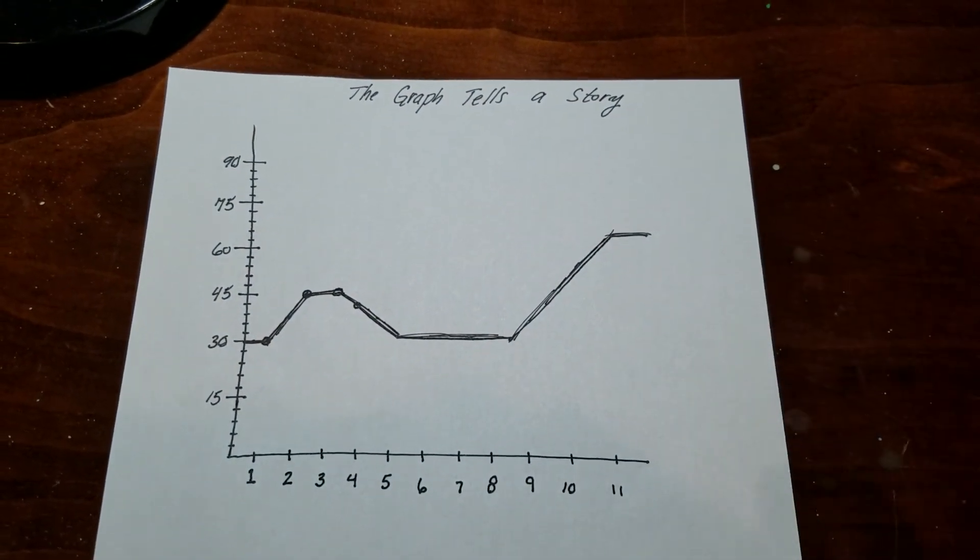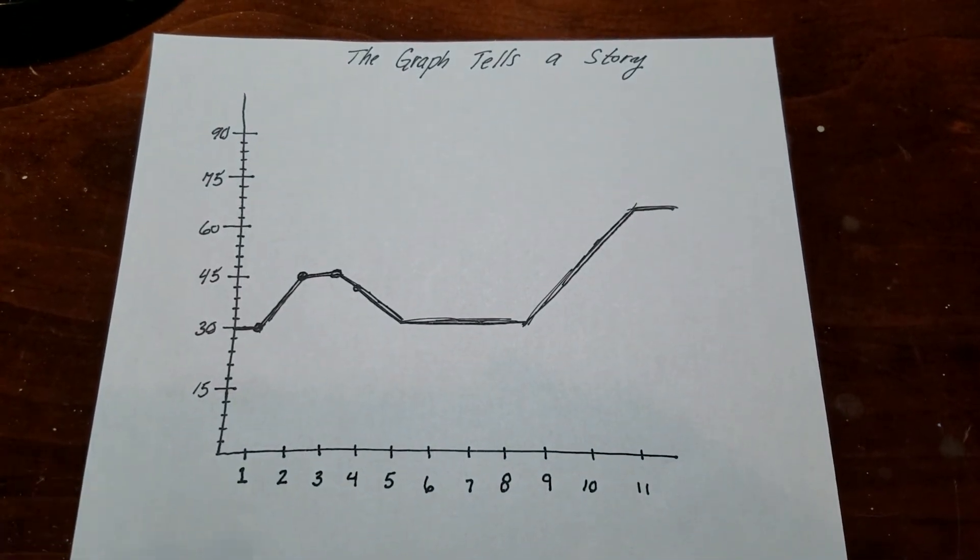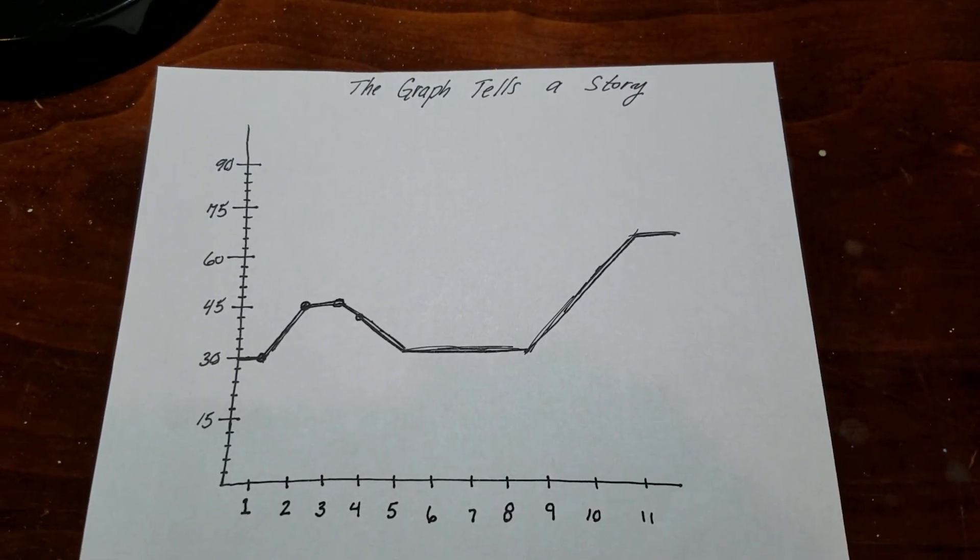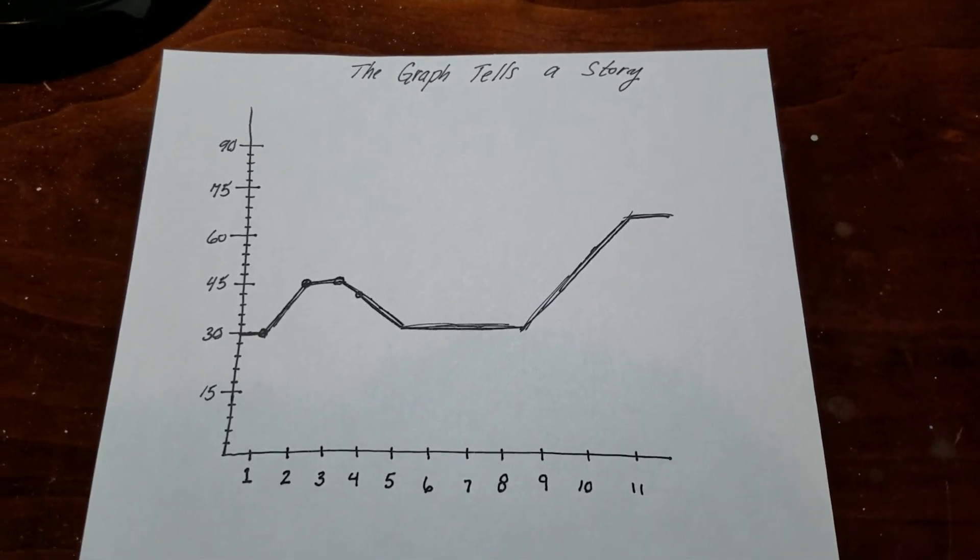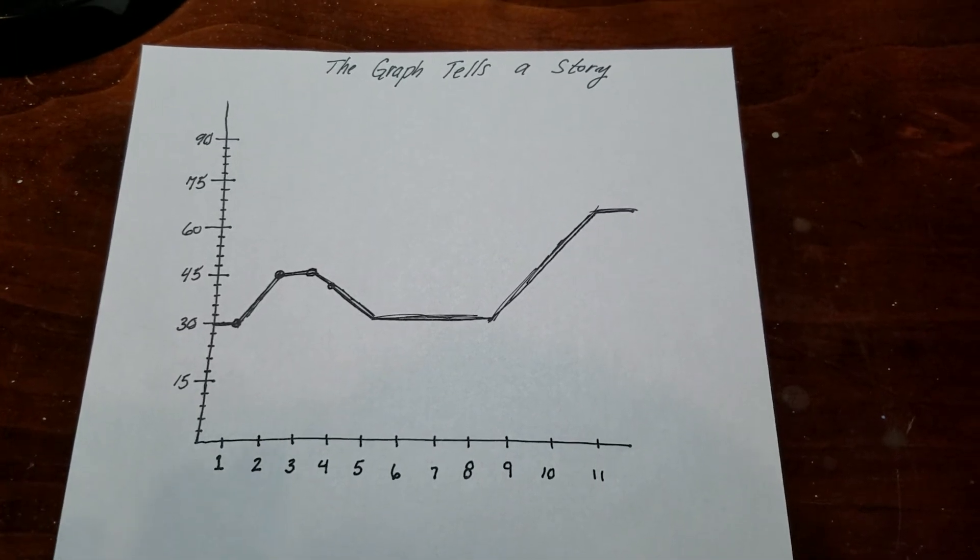So that's a changing rate example. Now I have to see if I can invent something for a changing total. So I think what I'll do is I'll say that I don't want to do distance. That's usually what people always do.